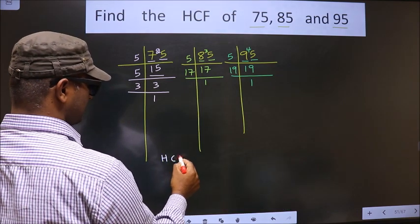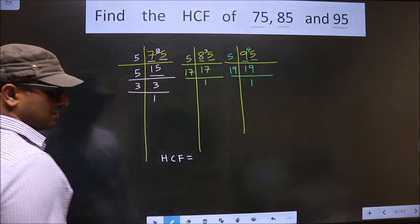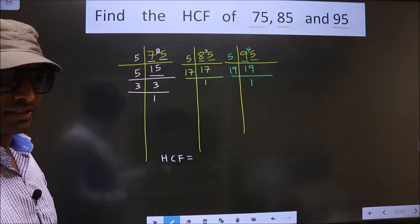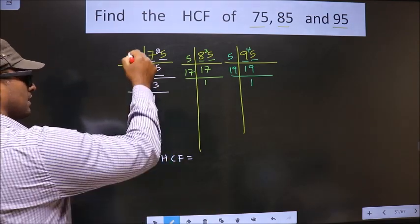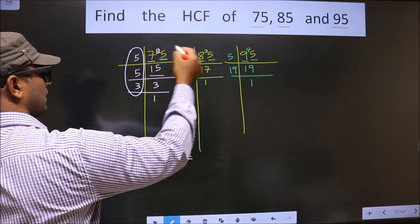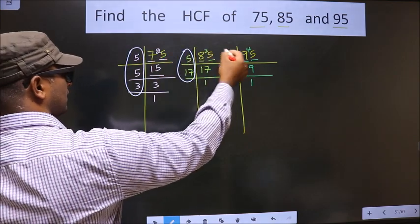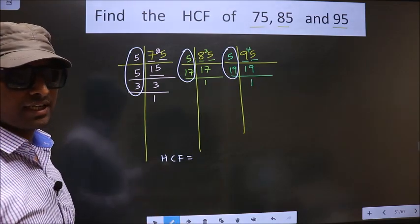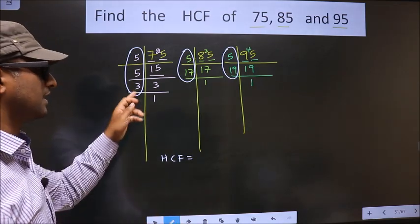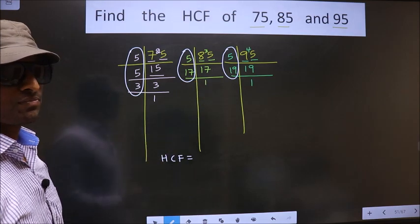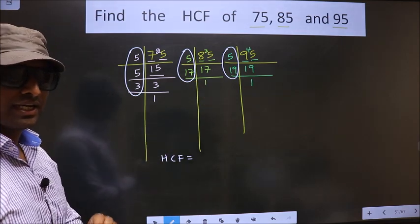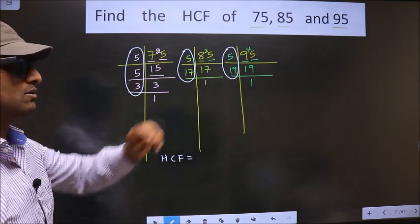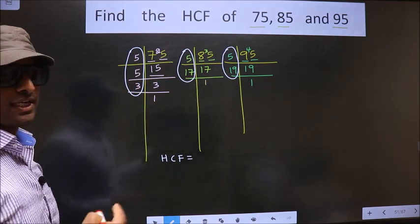So now our HCF is the product of numbers that are present in all three places. We should find the numbers that are present here and here and also here. I repeat, we should find the numbers that are present in all three places. So let us find.